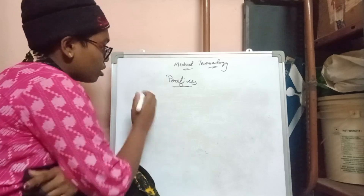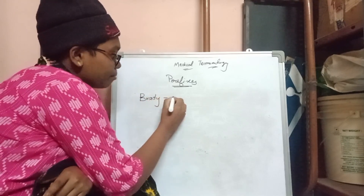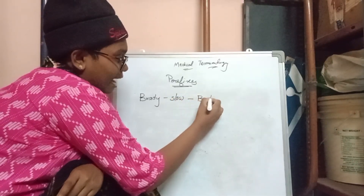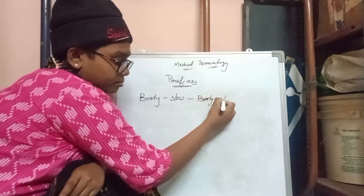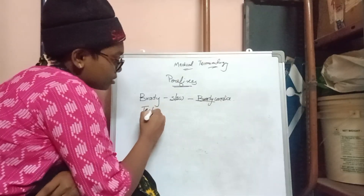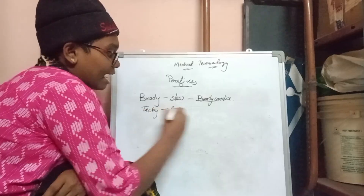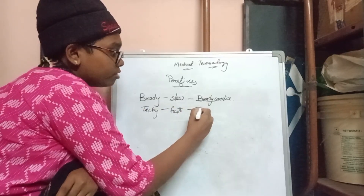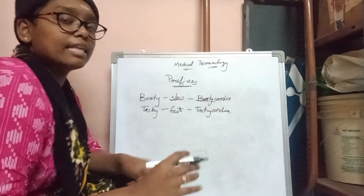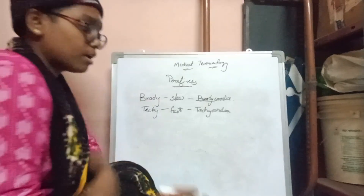The next prefix is 'brady,' which means slow. For example, 'bradycardia' means a slow beat of the heart. 'Tachy' means fast — as mentioned in a previous video — so 'tachycardia' means a fast beat of the heart. These are examples of prefixes.